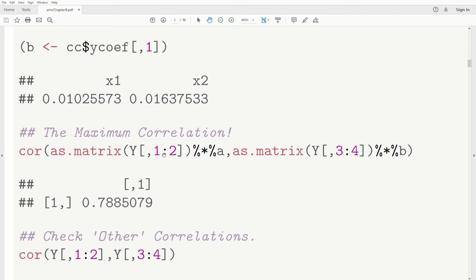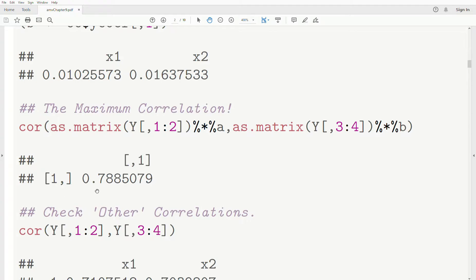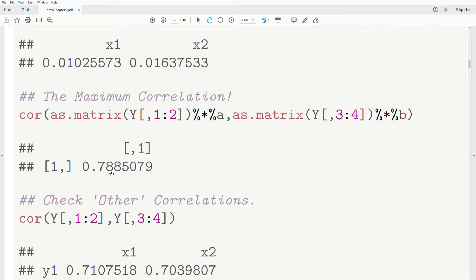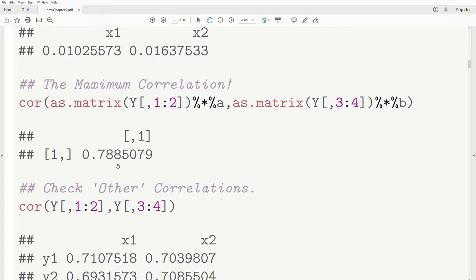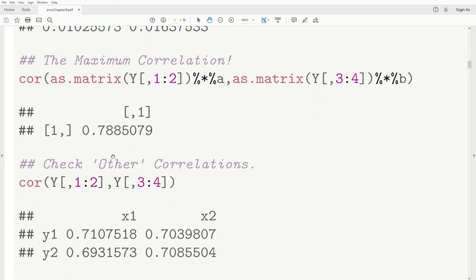Now if we look at the correlation of this linear combination and this linear combination, notice it's A in the first two, B in the second two. We get a correlation of 0.7885. And there's no possible other combination of these variables that will create a correlation this high. And to me, that is just so cool.